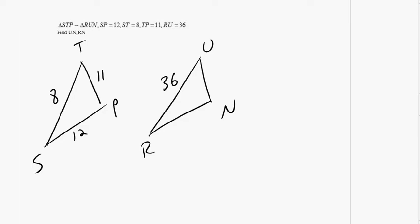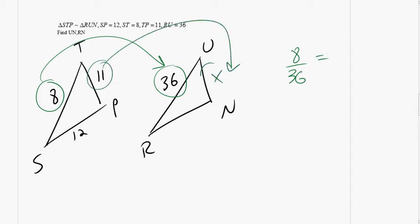Yeah, Emma. Okay, what did you call X? What value is represented by X on your picture? UN. I bring that up because that's not an insignificant step. Calling something that you don't know a variable, we've been talking about that. 11 over X.